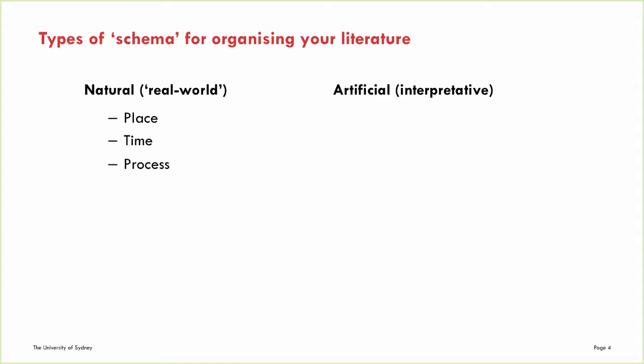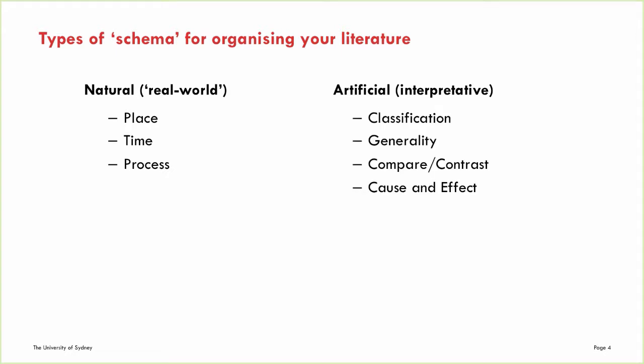On the other hand, there are artificial or interpretive schema — for example, classification, generality, compare/contrast, or cause and effect. These are artificial because there is less agreement on what ideas are included, and part of the role of research is to argue about how to classify concepts or the causes of particular phenomena. Natural schema are the organizing principles foregrounded in descriptive writing, whereas artificial schema are foregrounded in analytical writing.